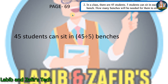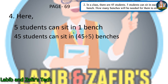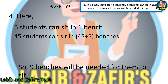Our fourth word problem is from page 69: in a class there are 45 students, five students can sit in each bench — how many benches will be needed? Five students can sit in one bench, so 45 students can sit in 45 divided by 5 benches, which equals 9. So nine benches will be needed for them to sit.